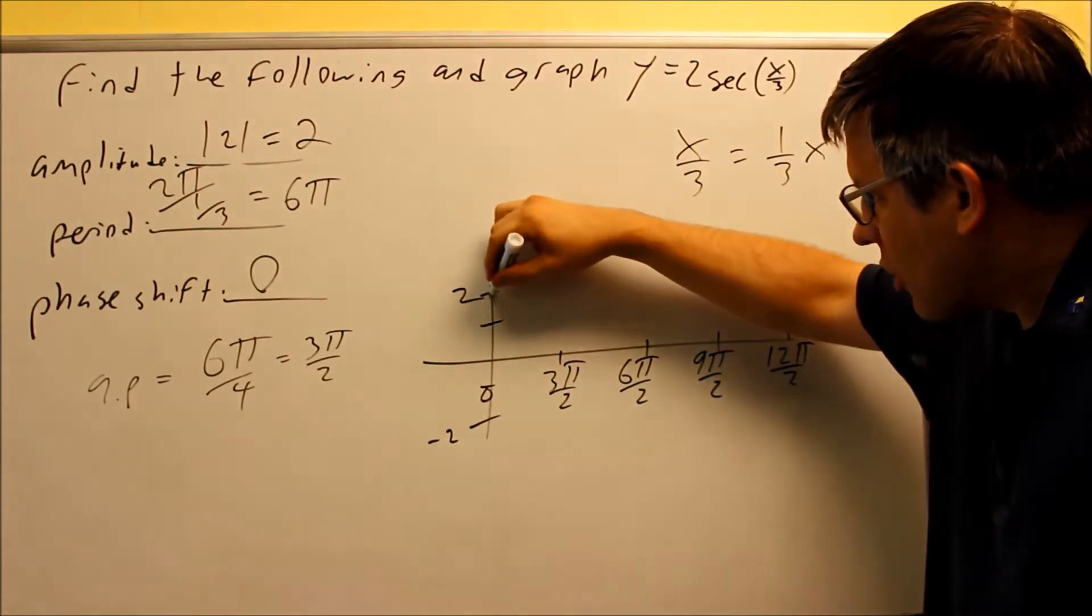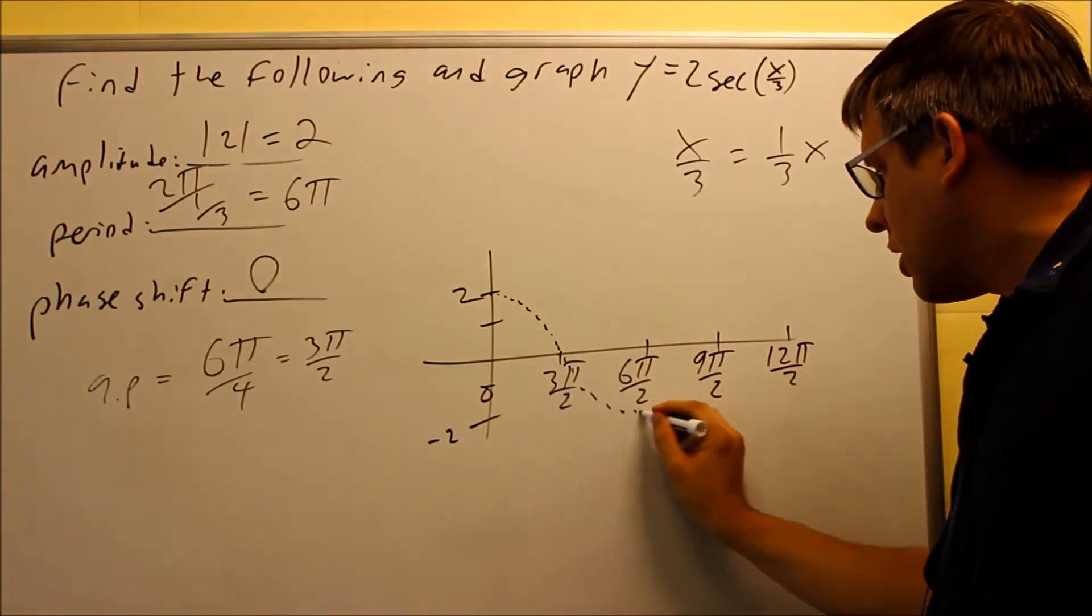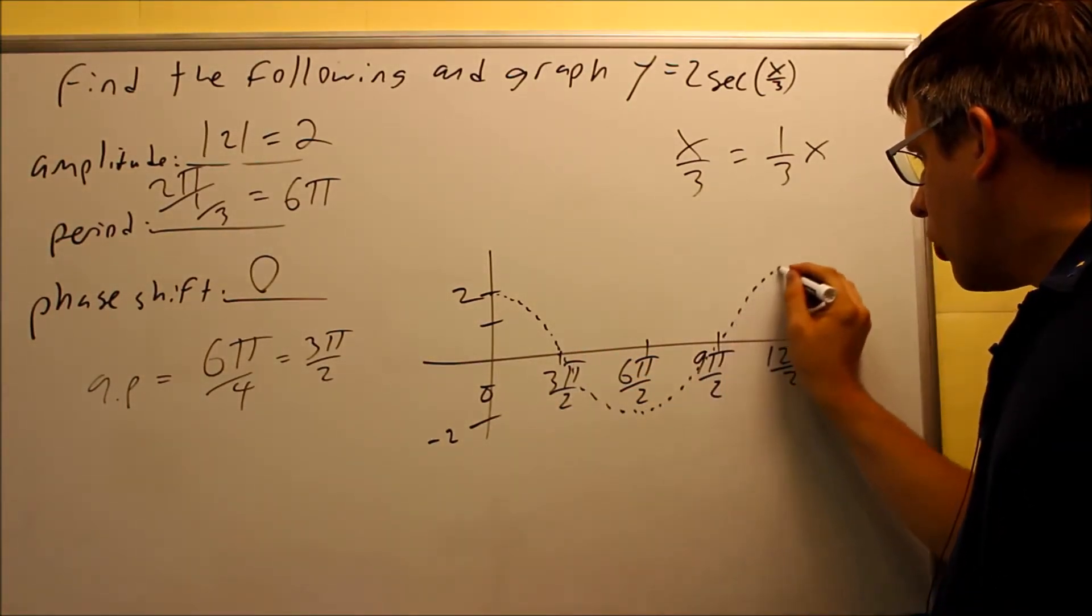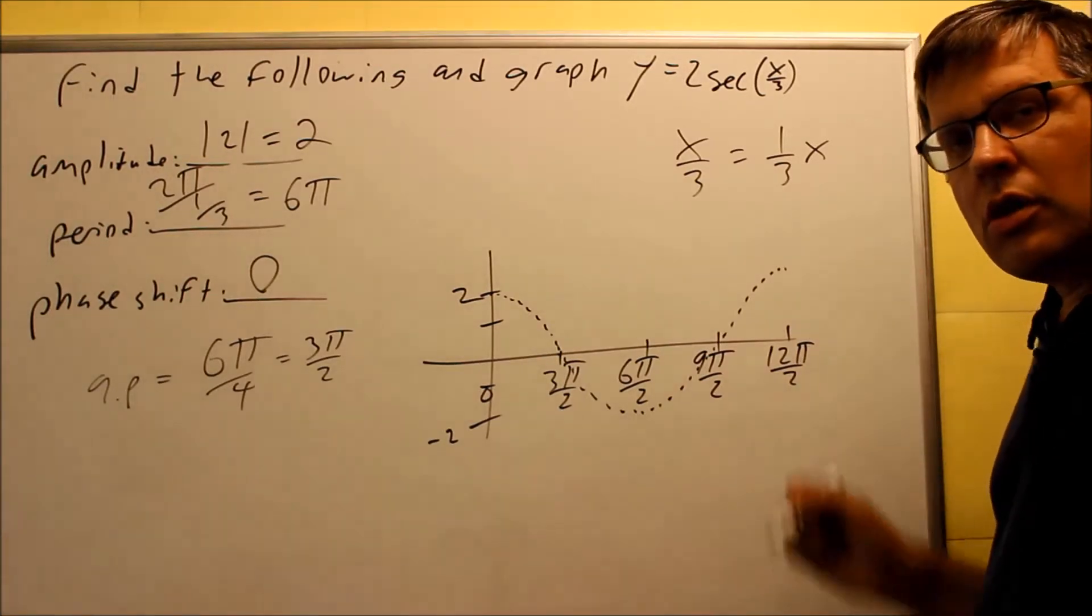So cosine starts at the amplitude, so it's going to start up here. That's going to come down there, come down to here, and then go back up to there. So this would be one cycle for your cosine graph.